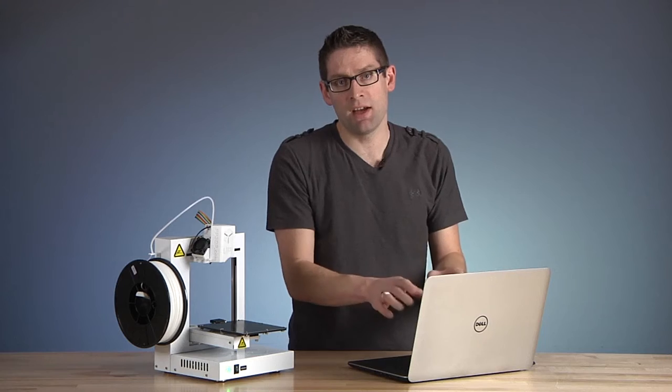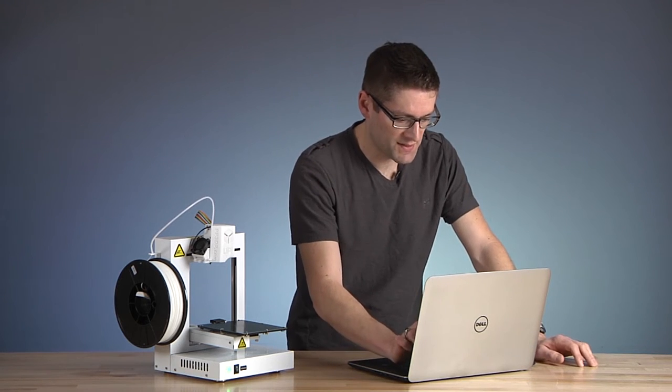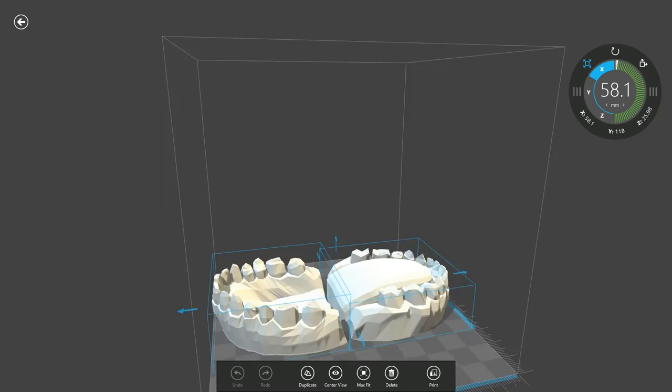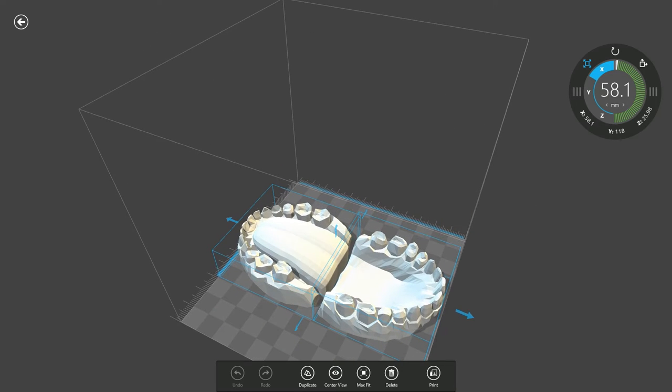This is where I like the built-in touch with the M3800—I can pinch to zoom. I can drag my finger around to check out this object. Looks good. Looks like it's going to fit on the build platform.